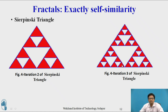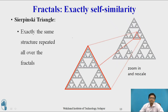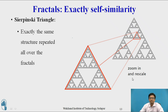Whenever you zoom this part, you see the original triangle. In this way, we get the Sierpinski triangle. Whenever you zoom any part, you get exactly the same structure repeated over the fractal. This is an exactly self-similarity fractal.